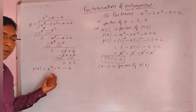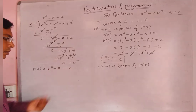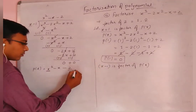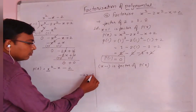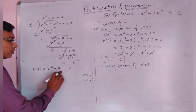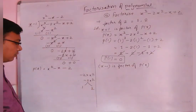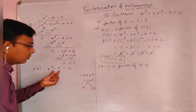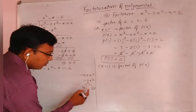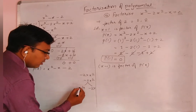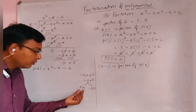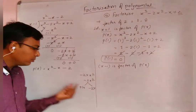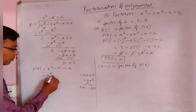This is a quadratic polynomial. By using the splitting method, we need to find two numbers whose product is minus 2 times x squared, that is minus 2, and whose sum is minus x. The factors of 2 are 1 and 2. We put a minus sign to the bigger number and a positive sign to the smaller number, so we write minus 2x plus 1x, which gives minus x.